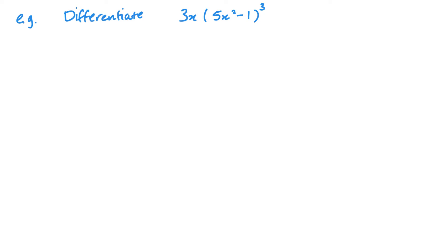So in this one, we can see we've got a function here, 3x, multiplied by the second function here, which is 5x squared minus 1, all raised to the power 3. So what I do is I call the first function U and the second function V. It doesn't really matter which way round, but that's what we do. So we want U equals 3x and V equals 5x squared minus 1 cubed.